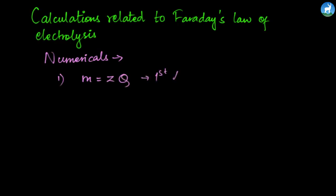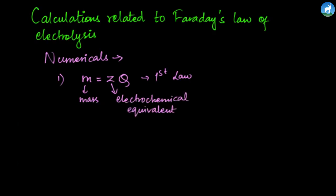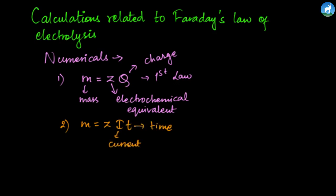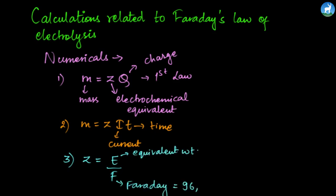In this formula, M is mass, Z is the electrochemical equivalent, and Q is charge. Q equals I times T, where I is current and T is time. Z, the electrochemical equivalent, equals E by F, where E is equivalent weight and F is Faraday's constant with value 96,500 coulombs.